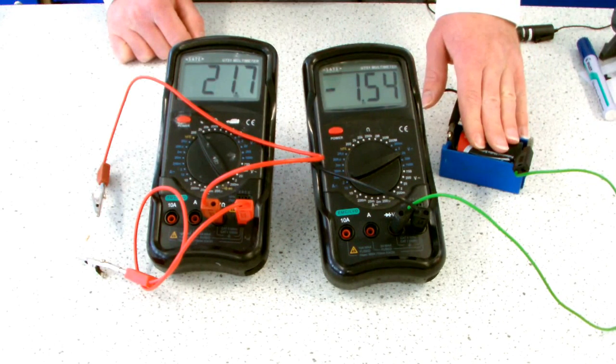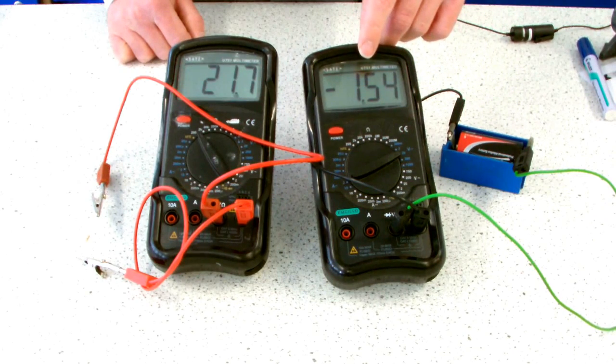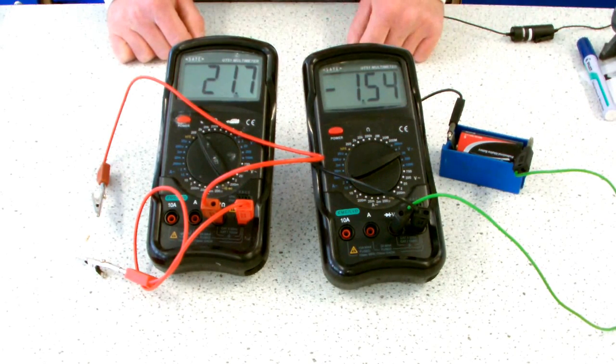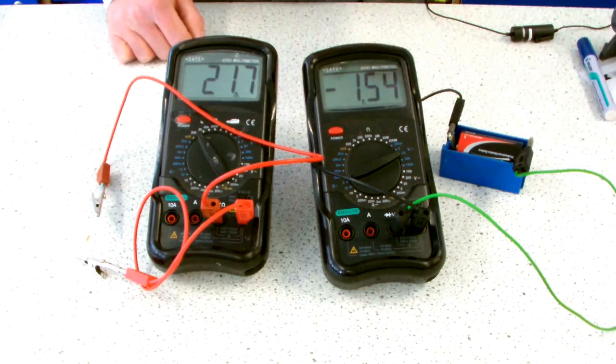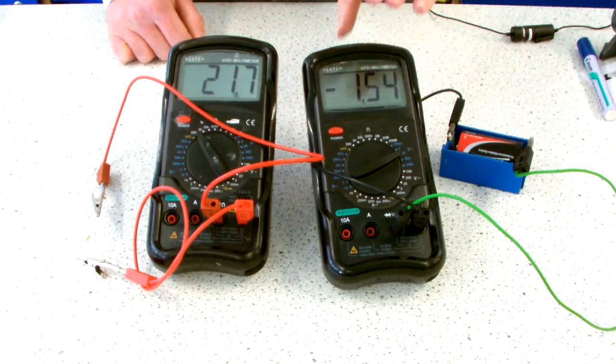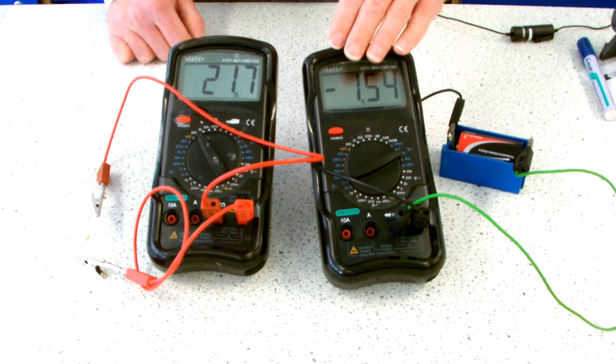And we can also check the EMF of the cell. This is a 1.5, or actually we've got 1.54 volts. This EMF is when there's no power being drawn so there's no other components in the circuit apart from this very high resistance multimeter, so this should be the same values we get from our graph of the actual EMF of the cell.